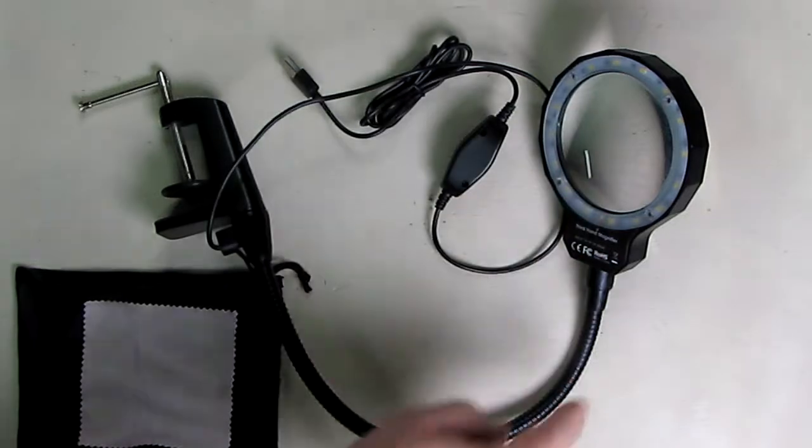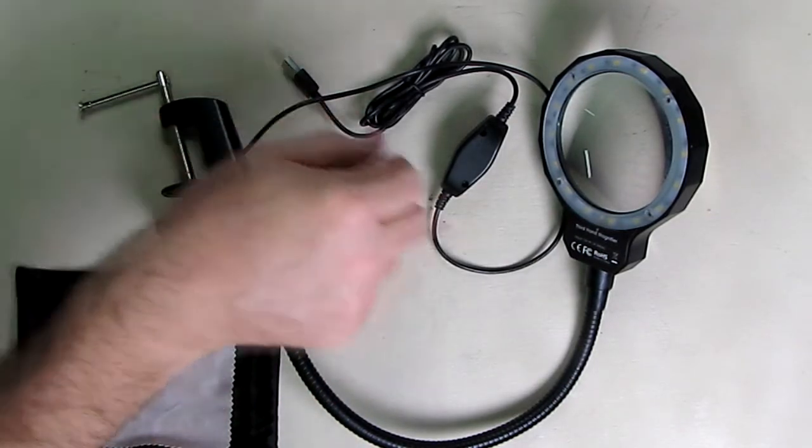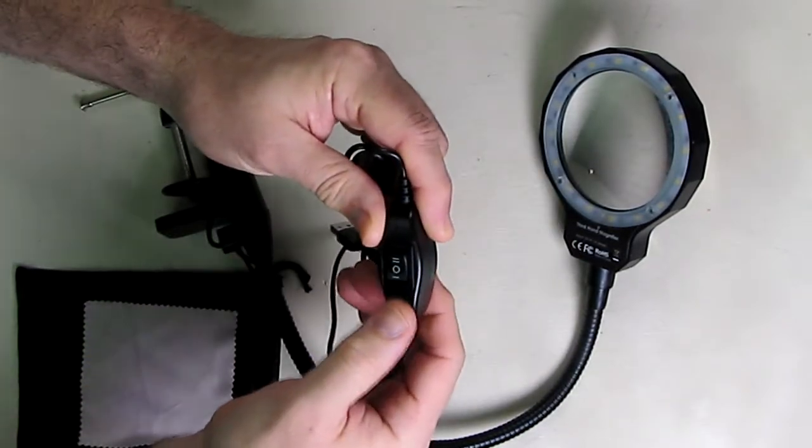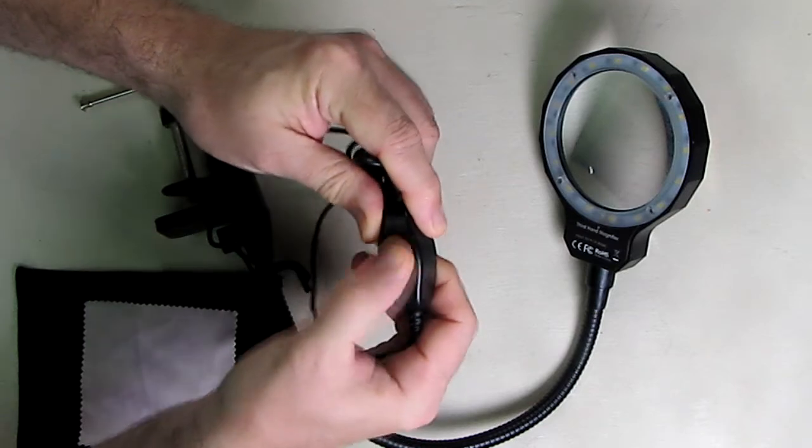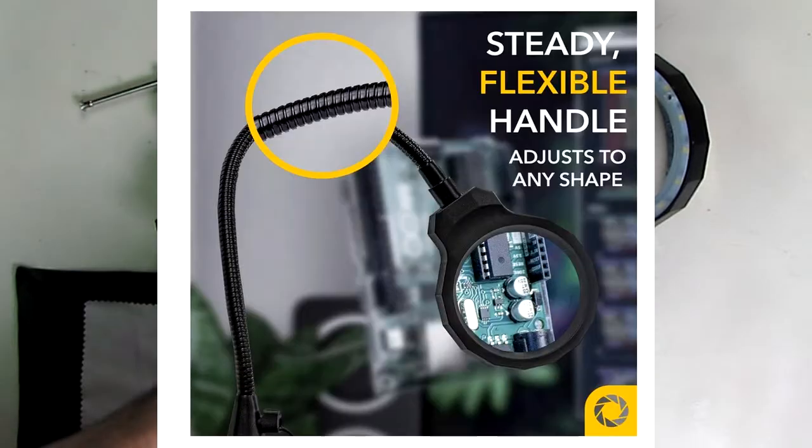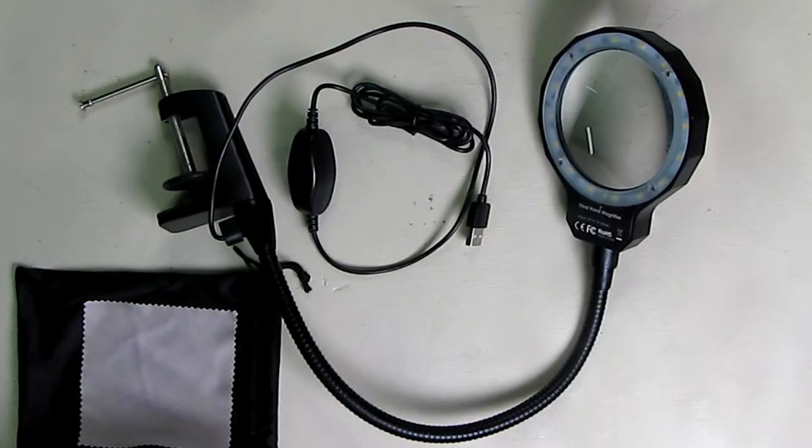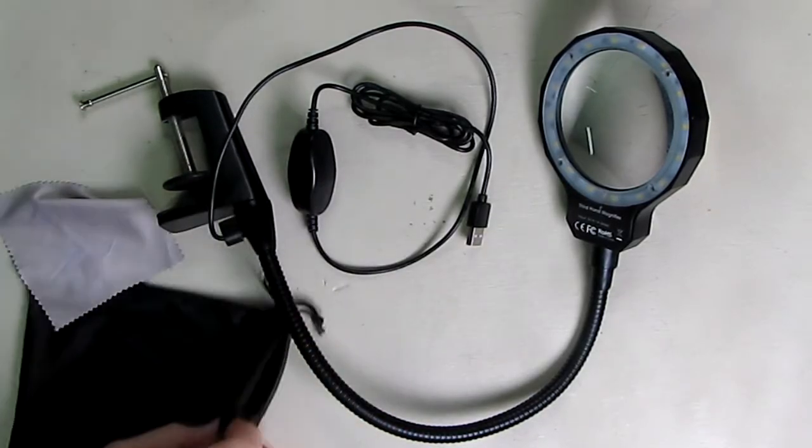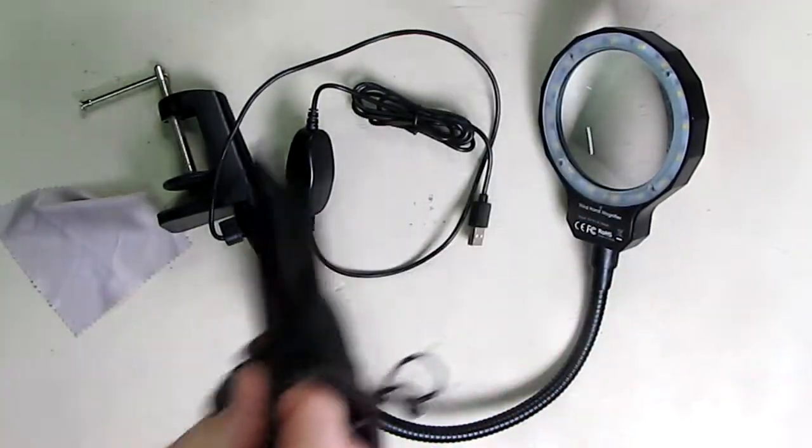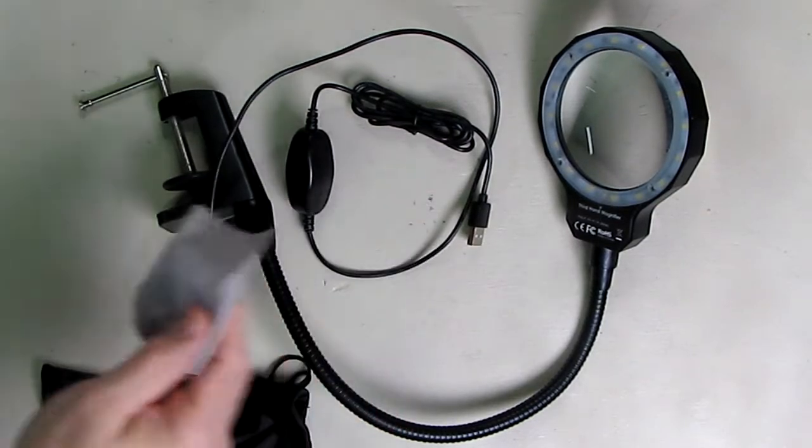So here's the light itself. It has the clamp that you screw on right there and the USB port with an off, low, and high position. You can use any typical one amp USB port which are readily available and very inexpensive these days. It also comes with a cleaning cloth and a little holder that you can put over the lens to protect it from dust.